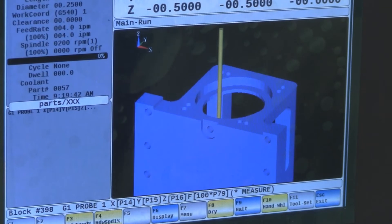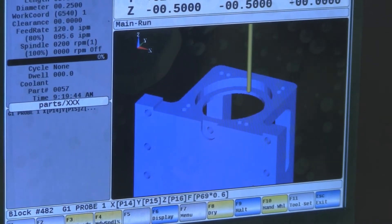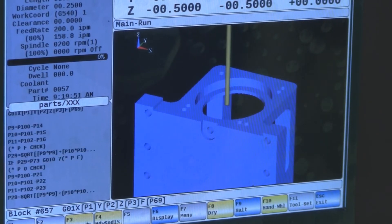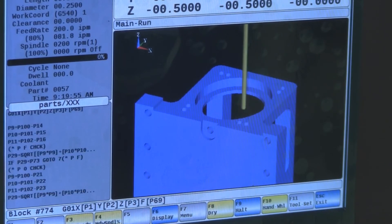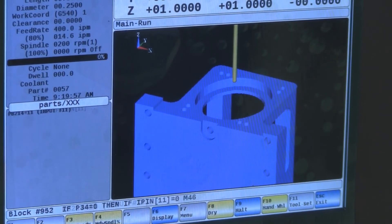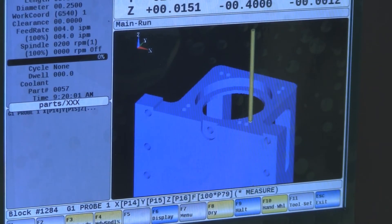Like I said, the feed rate override is active while it's probing. When it's actually making its measurement, feed rate override gets locked at 100%.